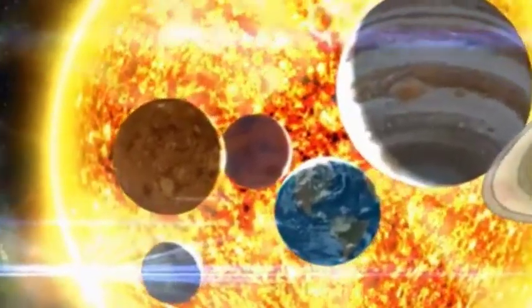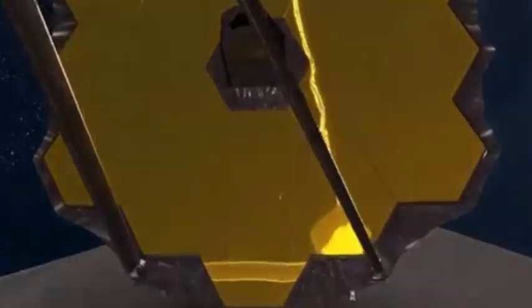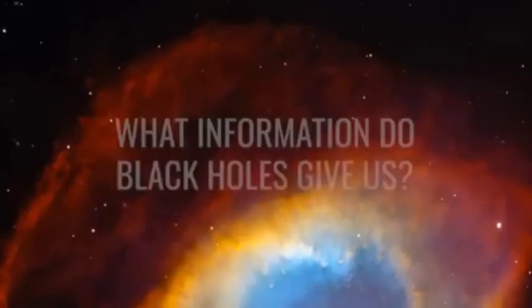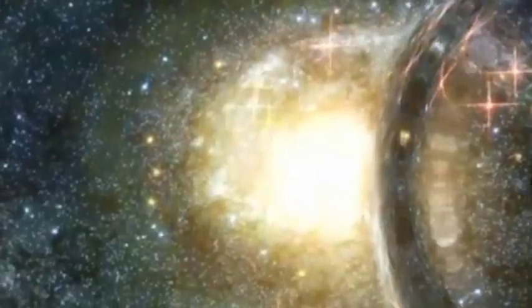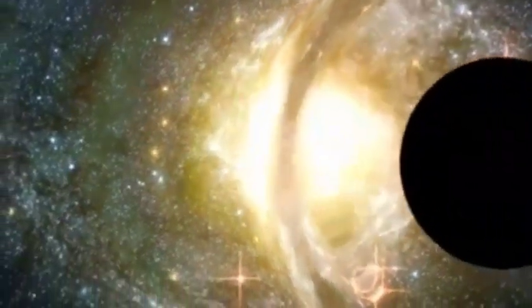To this end, the JWST has four main instruments, the NIR-CAM, the NIR-SPEC, MIRI, and FGS-NIR. These instruments allow the telescope to observe light in near and infrared regions that are invisible to the human eye.